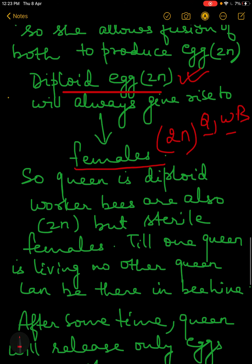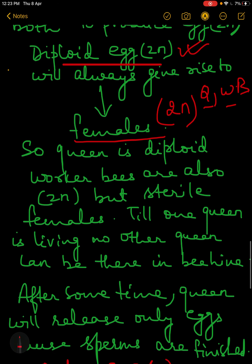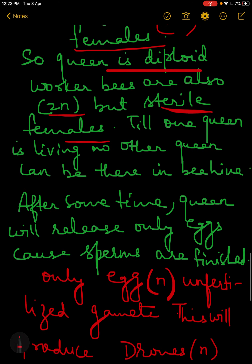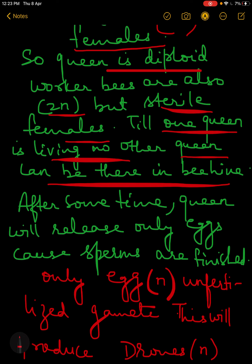Remember: as long as one queen is living, no other queen can be present in the beehive. Worker bees are sterile females.